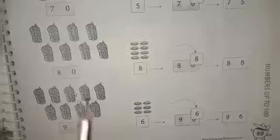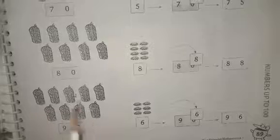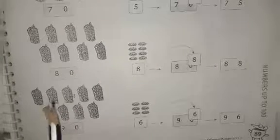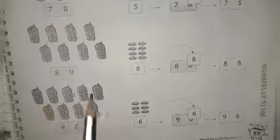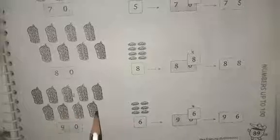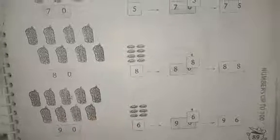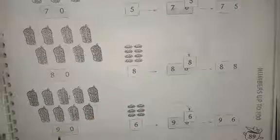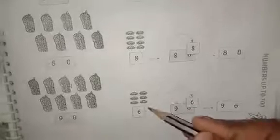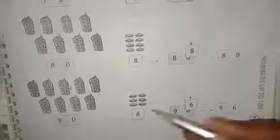And how many rolls here? 1, 2, 3, 4, 5, 6, 7, 8, 9 — that's 9 rolls, which means 90. And there are 6 loose biscuits here.